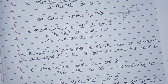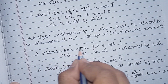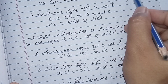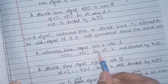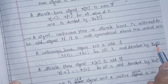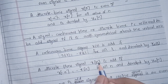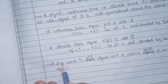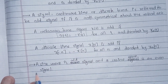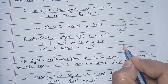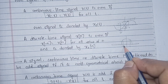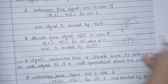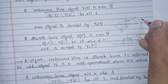A continuous time signal x(t) is odd if x(−t) equals −x(t) for all values of t, and it is denoted by x_o(t). Similarly, a discrete time signal x[n] is odd if x[−n] equals −x[n] for all n, denoted by x_o[n]. A sine wave is an odd signal and a cosine wave is an even signal. For the cosine signal, x(−t) equals x(t), confirming it is even.